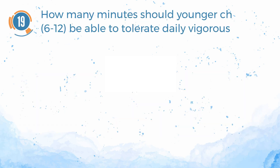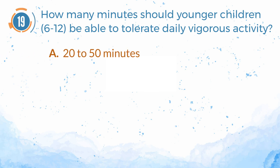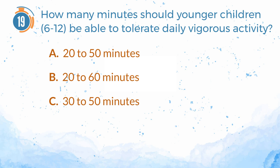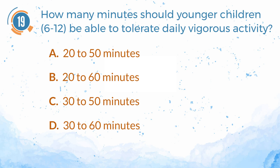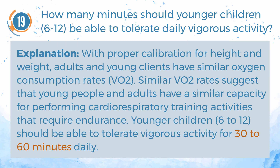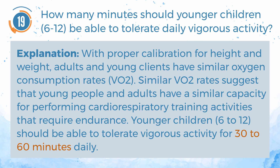Number 19. How many minutes should younger children (6 to 12) be able to tolerate daily vigorous activity? A. 20 to 50 minutes. B. 20 to 60 minutes. C. 30 to 50 minutes. D. 30 to 60 minutes. The answer is D, 30 to 60 minutes. Explanation: with proper calibration for height and weight, adults and young clients have similar oxygen consumption rates (VO2). Similar VO2 rates suggest young people and adults have a similar capacity for cardiorespiratory endurance training. Younger children (6 to 12) should be able to tolerate vigorous activity for 30 to 60 minutes daily.